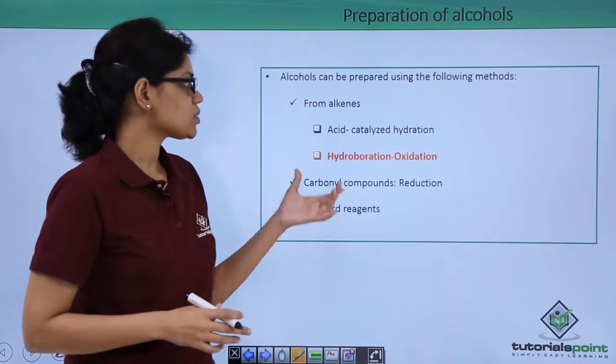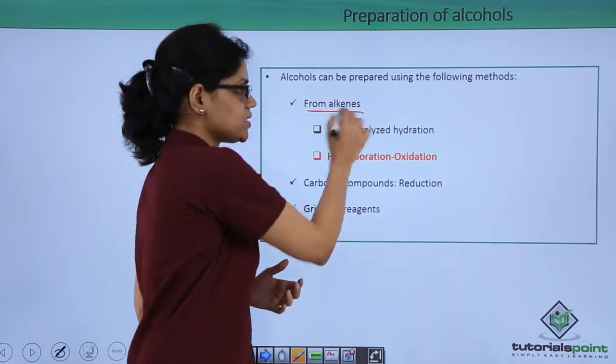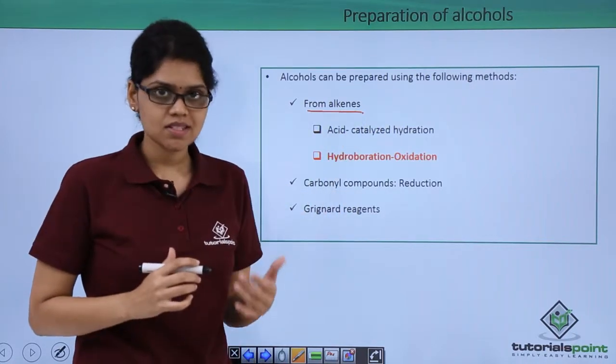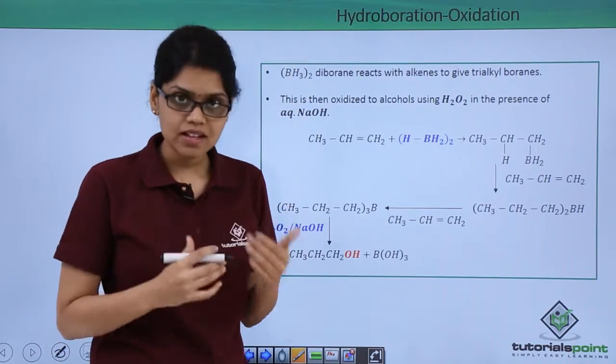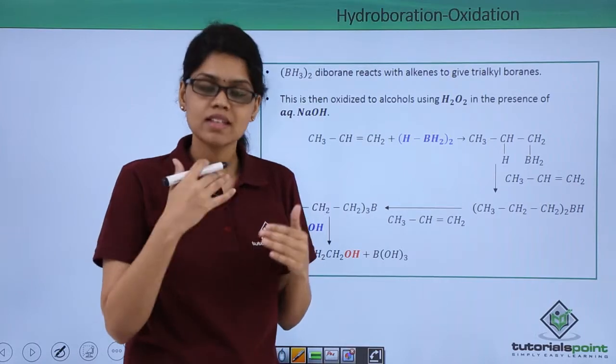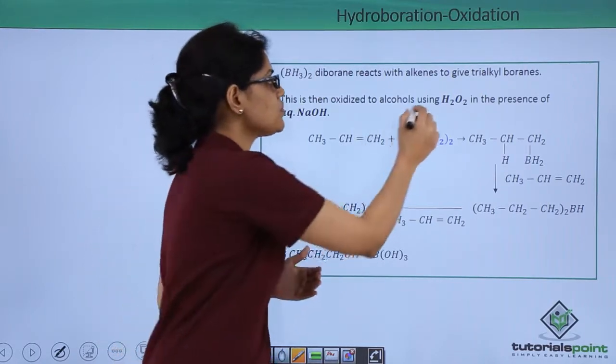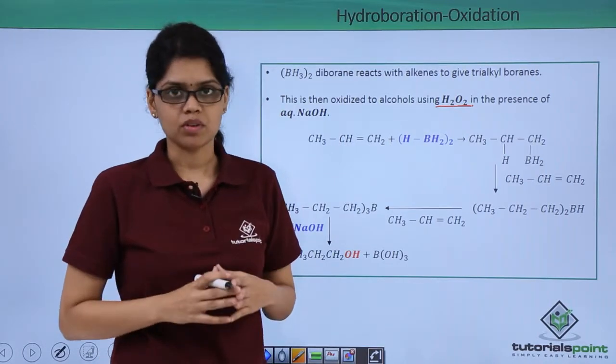In this reaction, as you can see, this is also a method by which we can obtain alcohols from alkanes. What happens in this reaction is that Diborane or B2H6 reacts with alkanes to give trialkyl boranes which is then oxidized in the second step using H2O2 and NaOH to give alcohol as the final product.